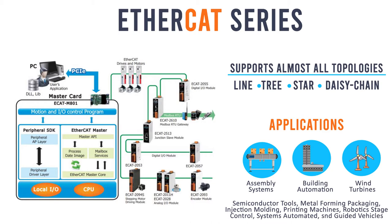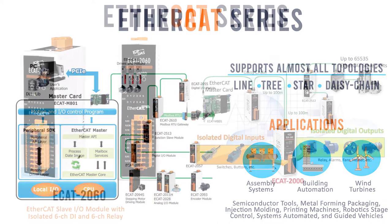Up to 65,535 devices can be connected to EtherCAT, so network expansion is virtually unlimited. It offers a lot of flexibility regarding cable types, so inexpensive industrial Ethernet cables can be used between two nodes up to 100 meters apart in 100BASE-TX mode.